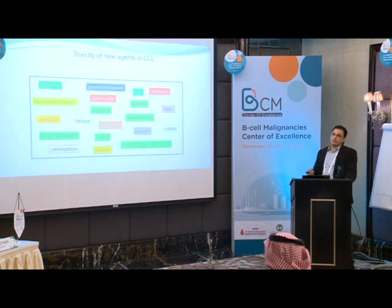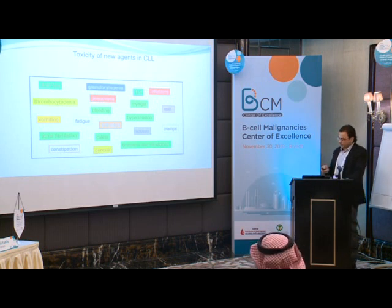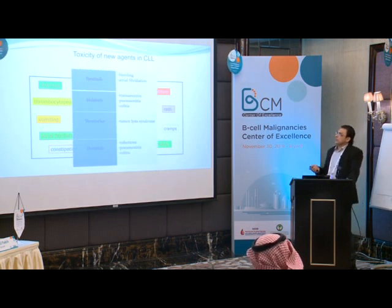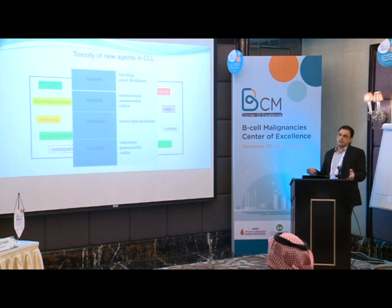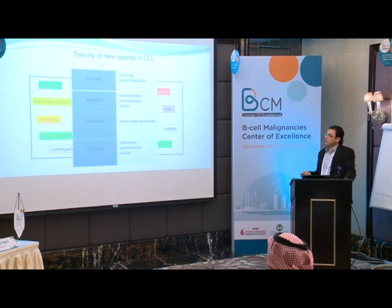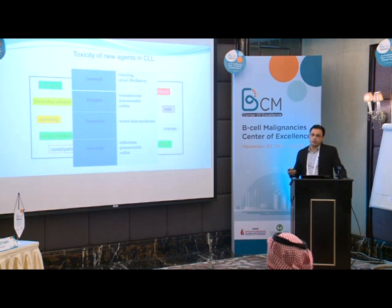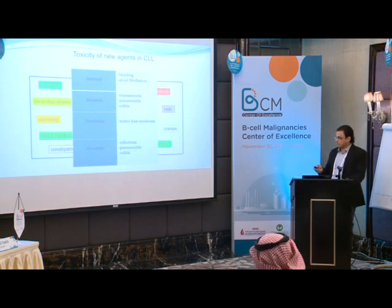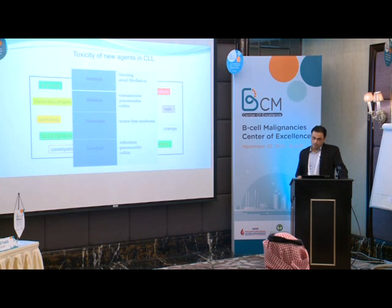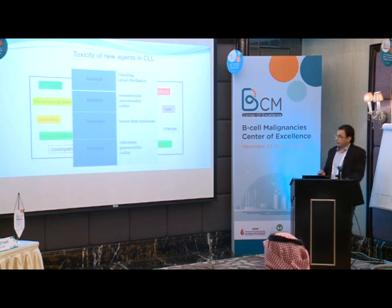Toxicity profile can also guide agent selection. Bleeding and AFib are common with ibrutinib — not ideal for patients already bleeding or with uncontrolled AFib. Transaminitis, pneumonitis, and colitis — autoimmune phenomena — occur with idelalisib and duvelisib, making them poor choices for patients with autoimmune disease, Crohn's, or interstitial lung disease. Venetoclax's major problem is tumor lysis syndrome, which may not be ideal for patients with borderline kidney function and high disease burden.